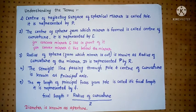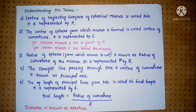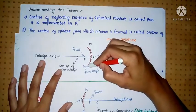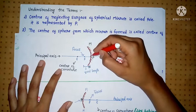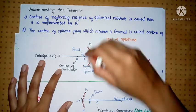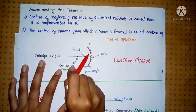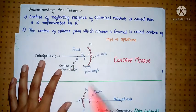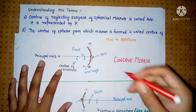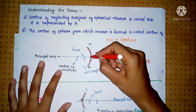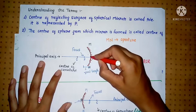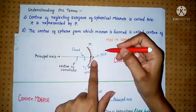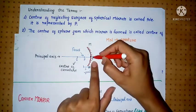First is the Pole. The center of the reflecting surface of the spherical mirror is called the pole. It is represented by P. This is a concave mirror, this is its polished surface, and this is the reflecting surface. The center of the reflecting surface is called the pole, represented by P.